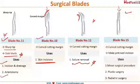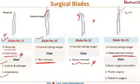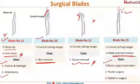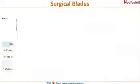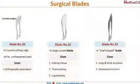Moving to blade number 15 — it has a belly and a curved margin outside. As the belly is the sharpest point, it is used for making precise incisions. Since blade number 15 is smaller in size, it is well suited for precise work. Its uses include minor surgical procedures, plastic surgery, and pediatric surgeries.